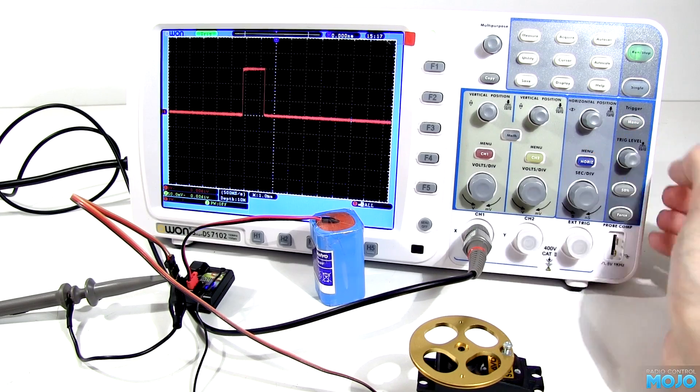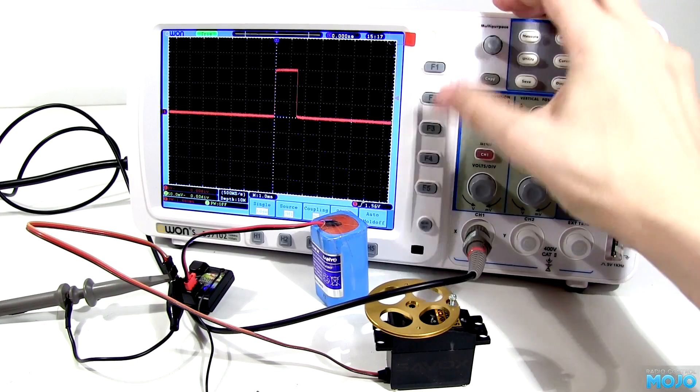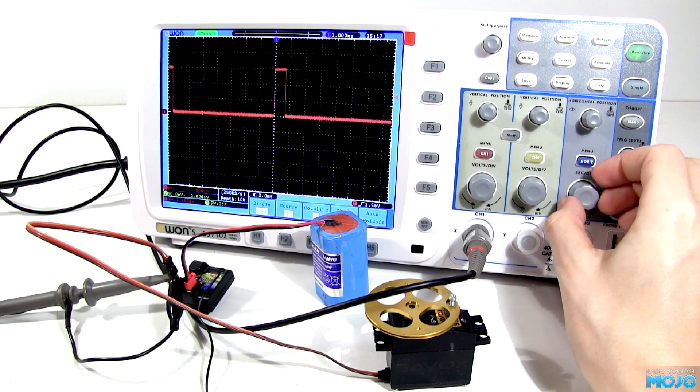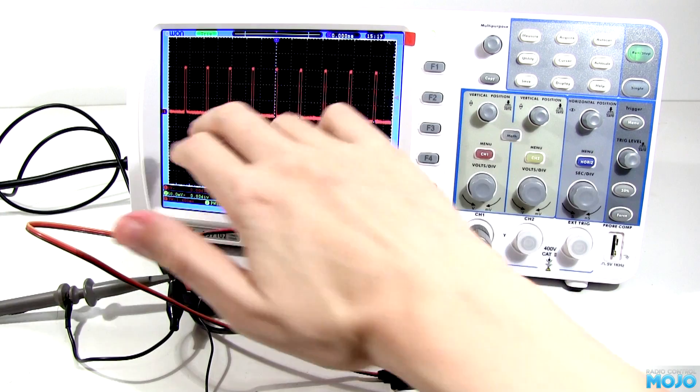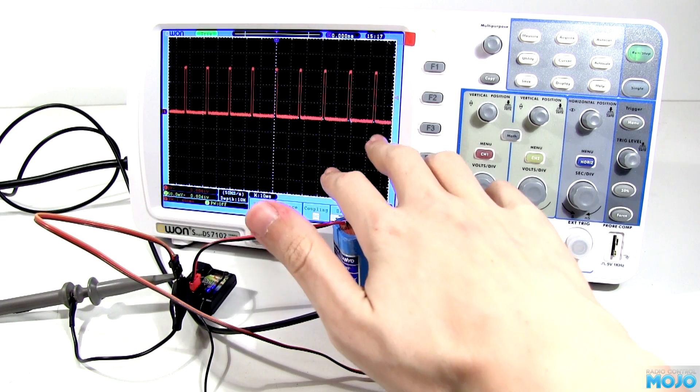And after fiddling with the knobs and settings, we have a nice pulse train. The display horizontal axis is time, and the vertical is voltage. So the low points are zero volts, and the high points are at three volts.